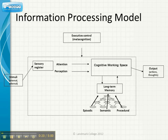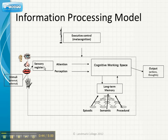So if you remember, we start off looking at the input, and here we've got stimuli coming in through our five senses: visual, auditory, olfactory, tactile, and so on. All these external stimuli enter our sensory register, and this is the first point of contact between our mind and brain and the external environment.